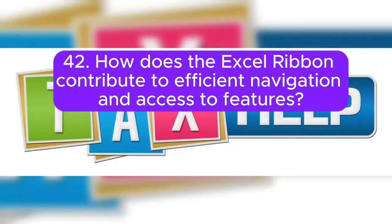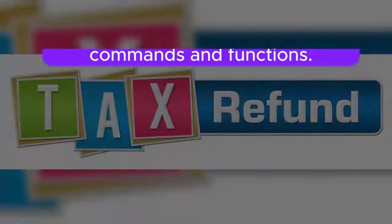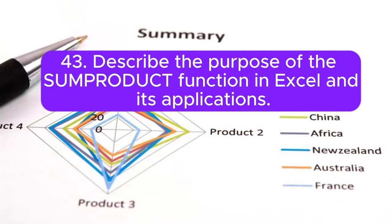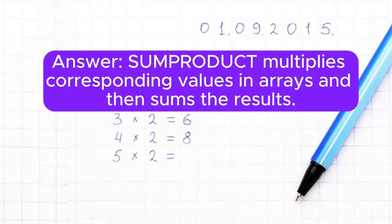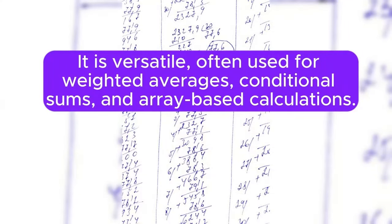Question 42: How does the Excel ribbon contribute to efficient navigation and access to features? The ribbon organizes Excel's features into tabs and groups, providing a visual and context-sensitive interface. It streamlines navigation and allows users to quickly access various commands and functions. Question 43: Describe the purpose of the SUMPRODUCT function in Excel and its applications. SUMPRODUCT multiplies corresponding values in arrays and then sums the results. It is versatile, often used for weighted averages, conditional sums, and array-based calculations.